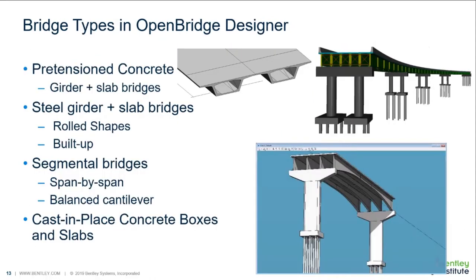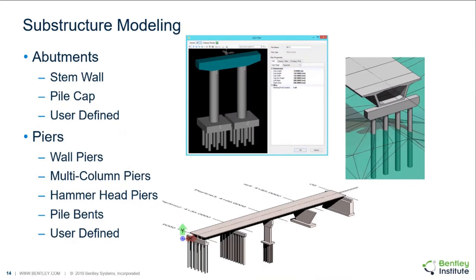OpenBridge Designer gives you the ability to design in a reality context, rapidly model the structure, and integrate other disciplines. The ProStructures part is what we're focusing on today, but also Navigator and LuminRT — all based on the same Connect platform. For those not familiar with the OpenBridge Modeler portion, we're still focusing on five superstructure types: precast pretensioned girder bridges, steel girder bridges with concrete slabs (rolled shapes or built-up plate girders), segmental bridges (span-by-span or balanced cantilever), and cast-in-place concrete boxes or slab structures. On the substructure side: stem wall or pile cap abutments, wall piers, multi-column hammerheads, pile bents, and user-defined options.